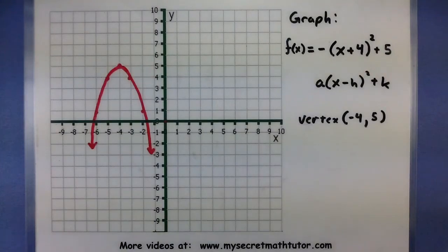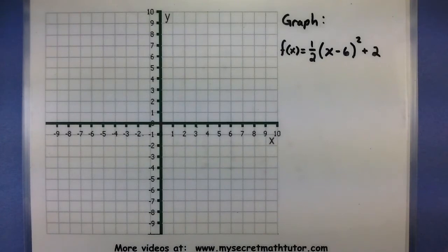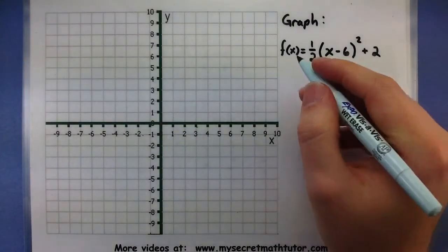Well, let's do this one more time just to make sure that we have the process. In this one, I want to graph f of x equals 1 half x minus 6 squared plus 2. So again, let's think of finding that vertex first.